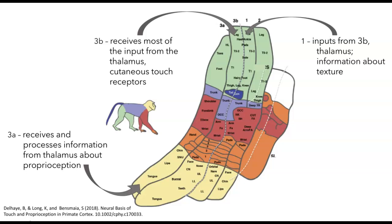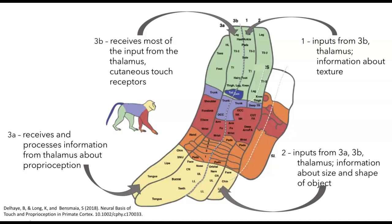Area 1 receives input from 3b, the thalamus, as well as other cortical areas, and this is involved in higher features, such as extracting information about texture. Area 2, which receives inputs from 3a and 3b and the thalamus, provides information about size and the shape of an object.